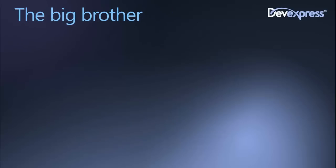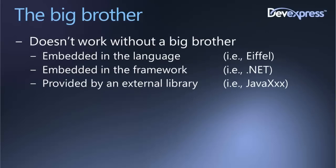Before we get to some Visual Studio code illustrating .NET Code Contracts, let me briefly spend a few words about the concept of the big brother we need surrounding our applications to ensure that correctness can really be enforced. Any environment that promises to prove or guarantee correctness cannot work without this sort of big brother. So the question is: where is my big brother?